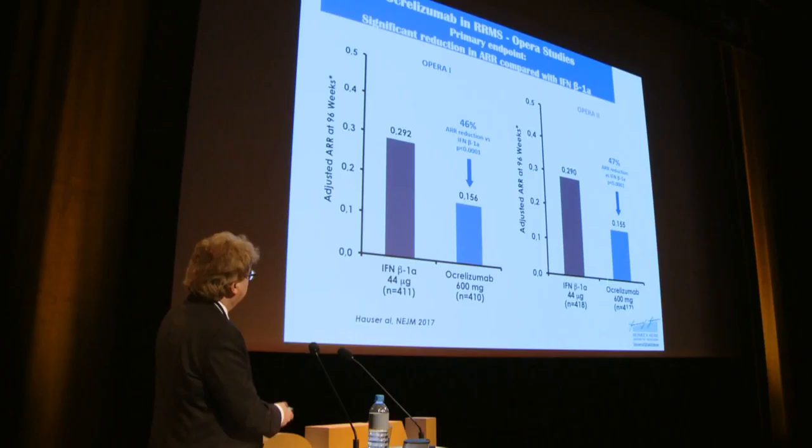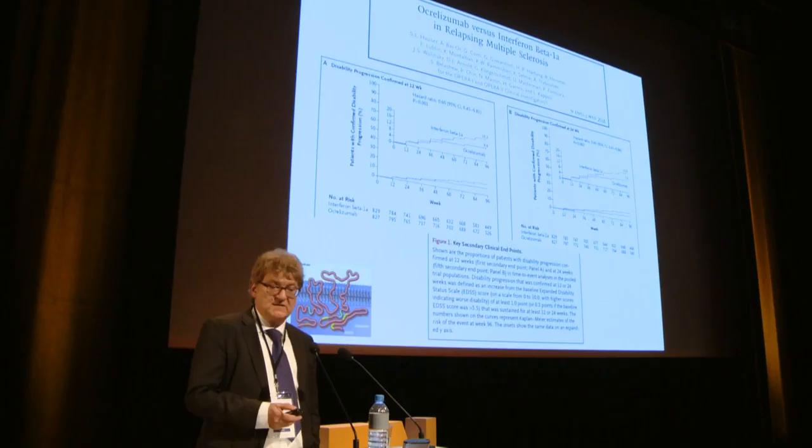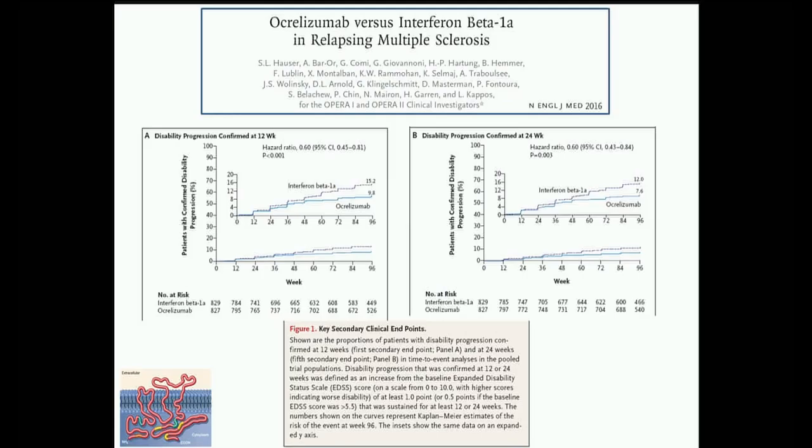Ocrelizumab results in relapsing-remitting MS showed robust reduction in relapse rates against the active comparator interferon beta-1a in twin phase three trials. This was corroborated by a marked decrease in the number of new or gadolinium-enhancing lesions and, in at least one trial, an impact on disability progression.